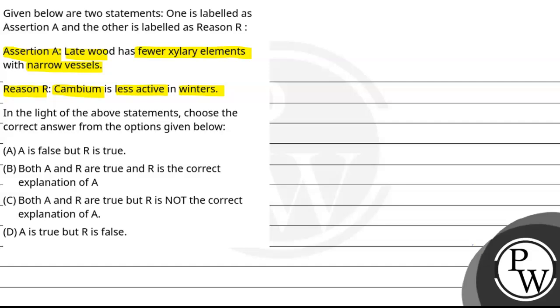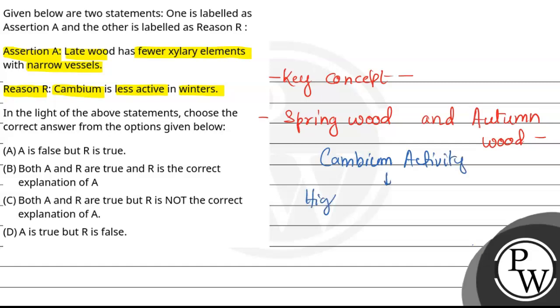To answer this question, let's understand the key concept. Here the key concept is springwood and autumn wood. The cambium activity in plants is highly influenced by environmental factors and specific climatic conditions.